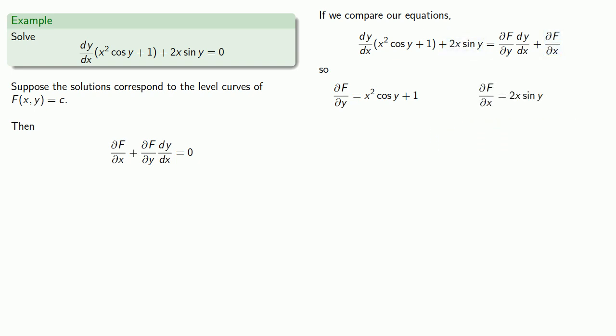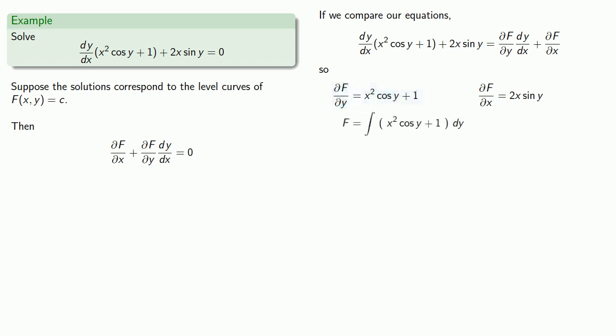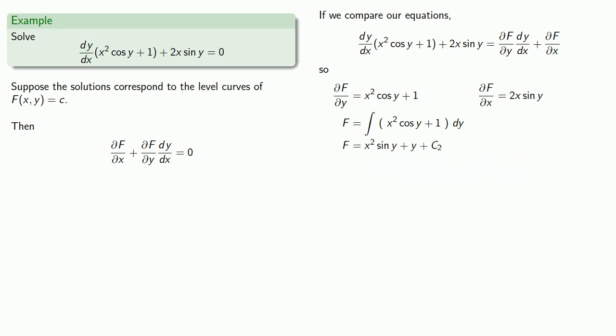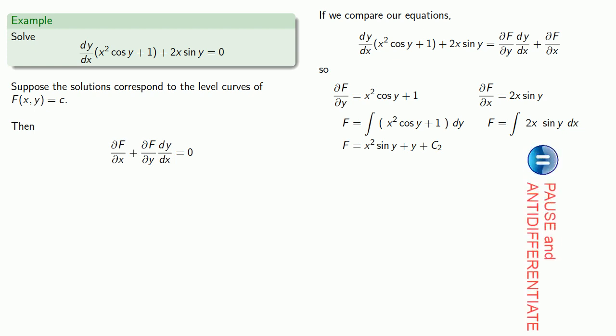We can find f by anti-differentiating, and we have two possibilities. First, since x squared cosine y plus 1 is the partial of f with respect to y, we can anti-differentiate with respect to y. Or, since 2x sine y is the partial of f with respect to x, we can anti-differentiate with respect to x.